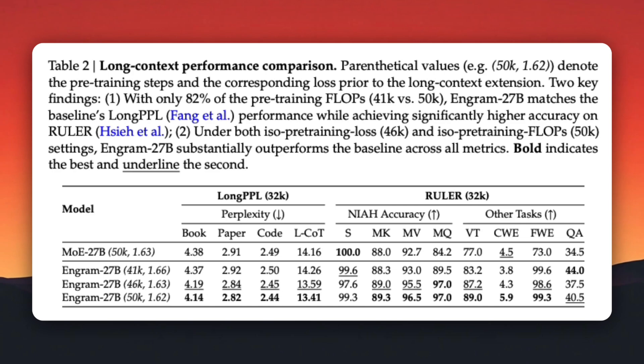Now let's talk about benchmarks — and I want to be very clear about what's confirmed versus what's reported. In DeepSeek's newly published Ngram paper, they test long context performance head-to-head against a standard MOE 27-billion baseline model. The result is consistent: Ngram matches or beats the baseline while using less training compute, and when training conditions are equal, it outperforms across nearly every long context metric. On document-level perplexity — books, papers, and code — Ngram holds parity or improves. On Ruler, which stresses long context reasoning, memory, and structure, Ngram shows clear gains across multi-hop reasoning, symbolic tasks, and long-range question answering. This is published, and it already shows that separating memory from reasoning works.